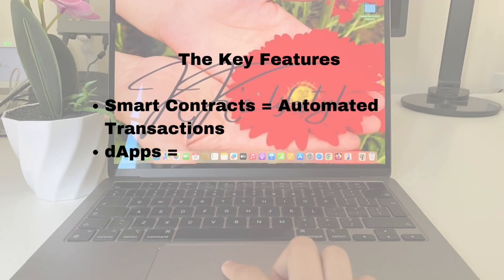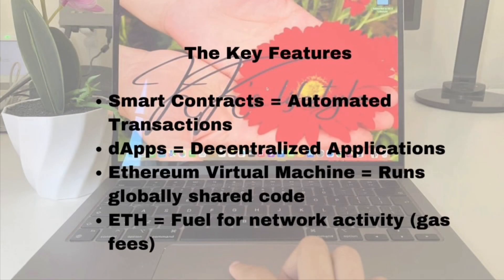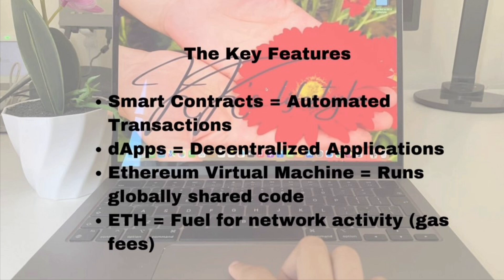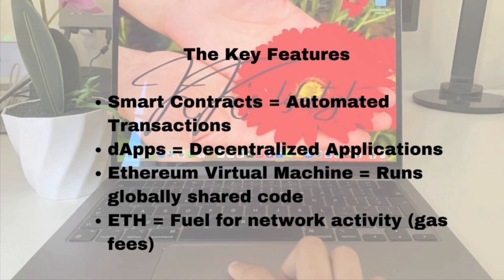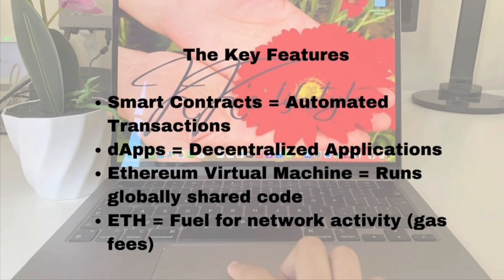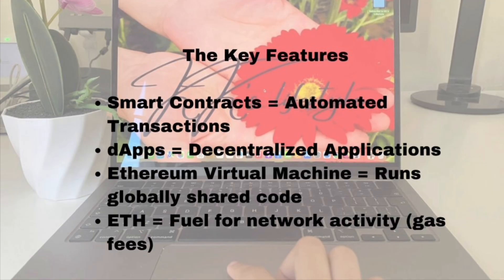Smart contracts are one of the most powerful features of Ethereum. They're essentially self-executing programs that run on the blockchain. Once the conditions written in the contract are met, the transaction automatically executes — no middleman, no delays, no need for trust. This makes them perfect for things like trades, loans, payments, memberships, and even games. Decentralized applications, or dApps, are apps built on top of Ethereum. They don't rely on a single company or server to operate. Instead, they run on a distributed network of nodes, which makes them more resistant to censorship, downtime, or centralized control.